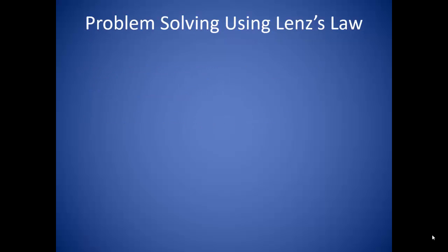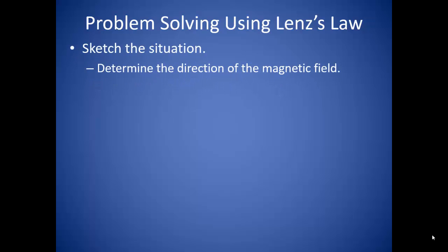Solving problems using Lenz's Law involves quite a bit more than simply plugging numbers into an equation. If you start out and take your time, they don't have to be quite so painful. Begin by sketching out the situation. A good diagram is one of the most powerful tools you can use to solve any problem, including a good representation of the direction of the magnetic field with respect to the loop of wire.